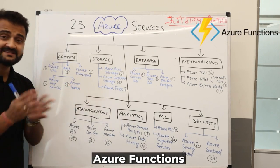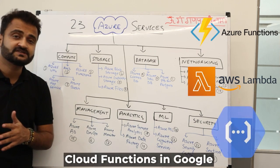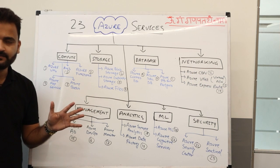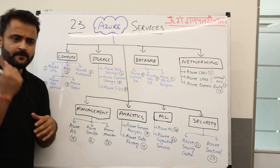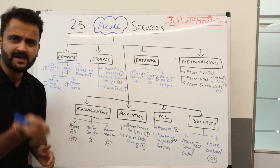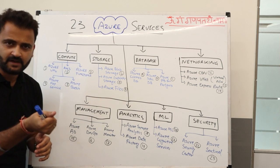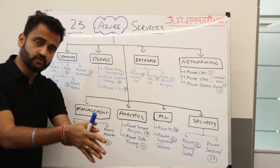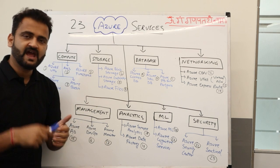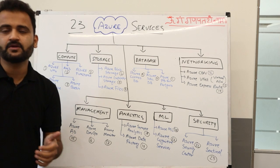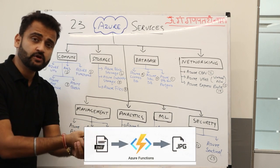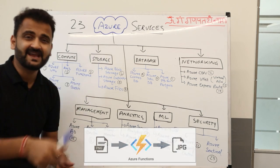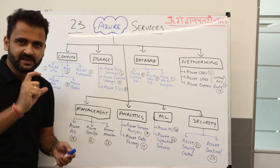The third is Azure Functions, similar to AWS Lambda and Cloud Functions in Google. These are event-driven functions completely managed by the cloud — no infrastructure needed. It is functions as a service. If you want to do scheduled tasks or event-driven tasks, you can use Azure Functions. For example, if you upload an image to storage and want it automatically converted from PNG to JPEG, Azure Functions can be used in those event-based scenarios.